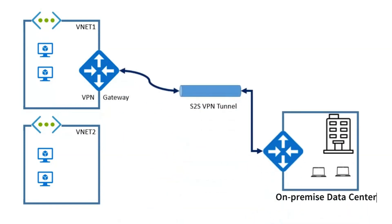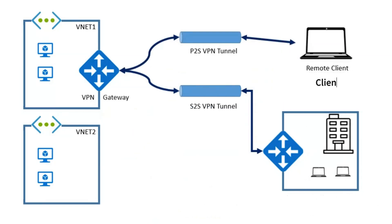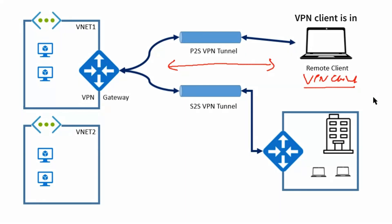Next, on a computer named Client1 that runs Windows 10, you configure a point-to-site VPN connection to VNet1. After having the VPN client installed on the remote computer, the point-to-site VPN tunnel is working. Then the next part of the question is that you configure virtual network peering between VNet1 and VNet2.